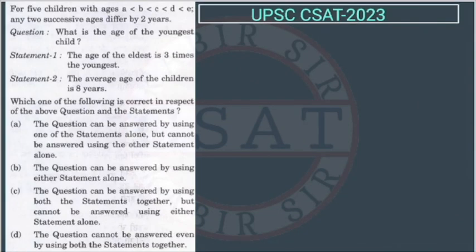This is the easy question. For five children with ages, they have given a is less than b, b is less than c, c is less than d, d is less than e, and any two successive ages differ by two years. So what is the age of the youngest child? The youngest child is a, so we have to find a.